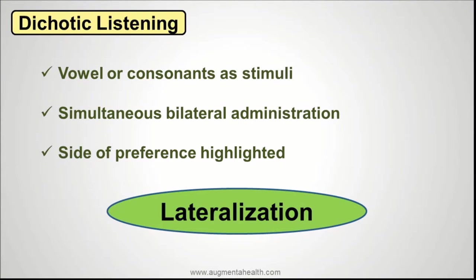There is another similar technique called dichotic listening. Dichotic listening is another technique by which lateralization is understood better. Vowels or consonants are used as stimuli and are bilaterally administered to the individual. Thereby, you are looking at the subject's preference of side through which he hears better. This would give the side of dominance of language. For example, in an individual with left brain lateralization for language, you would hear better in the right side of the ear compared to the left side of the ear.